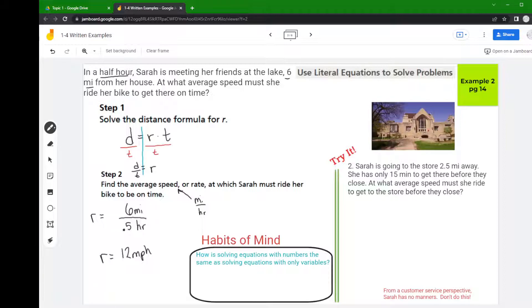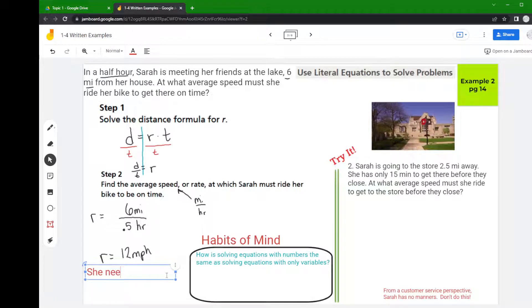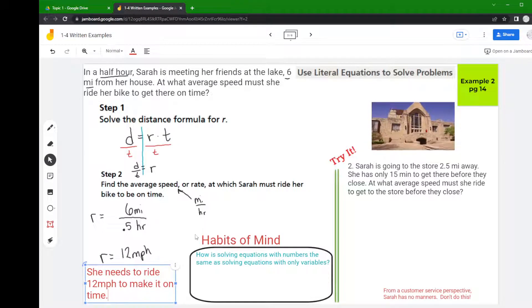So she needs to travel 12 miles per hour on her bike. Now this is a word problem so I'm going to answer it with a word answer, which is a really good habit to get into. She needs to ride 12 miles per hour to make it on time.